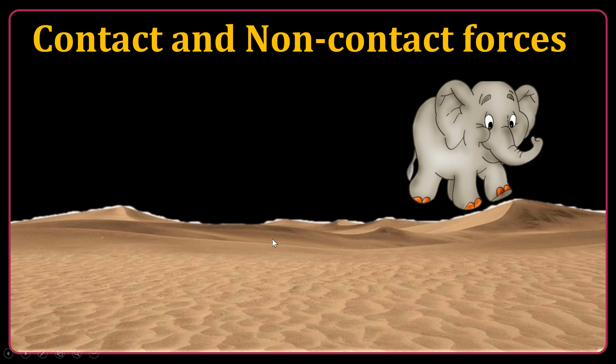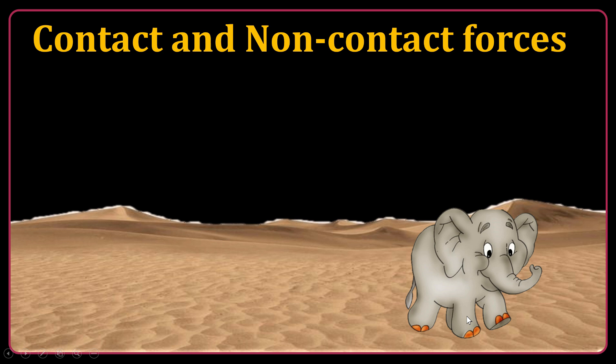Forces could be contact or non-contact. What do I mean by that? You know that weight is a non-contact force. For instance, when the elephant is released from maybe a height, it is not in contact with the earth, but it's pulled down. Because it's a non-contact force, it can affect the object from distance.